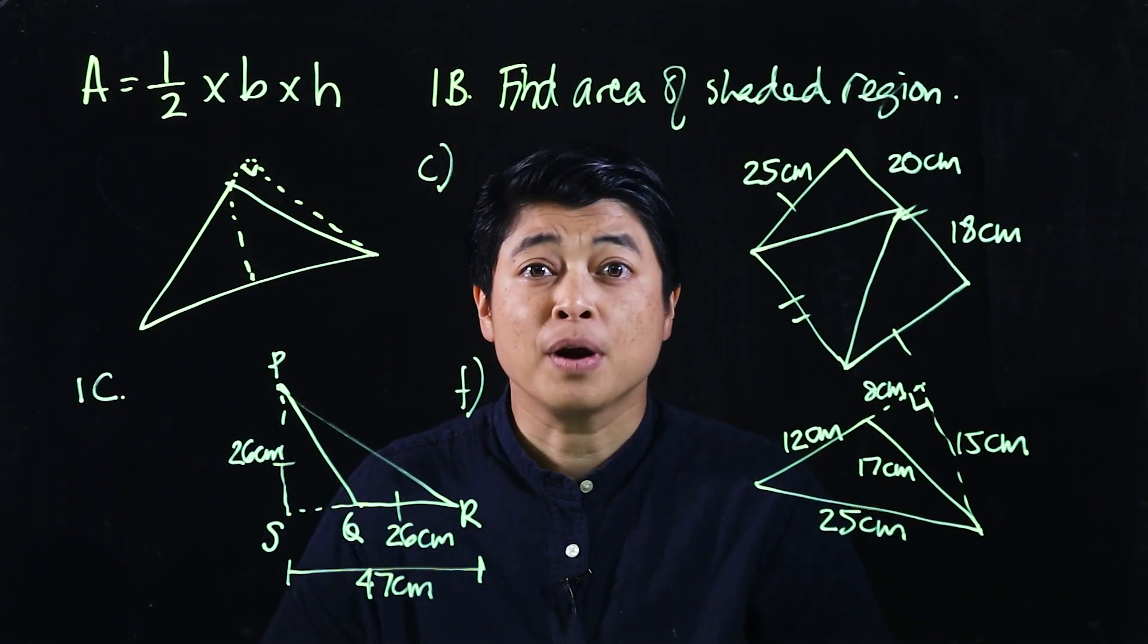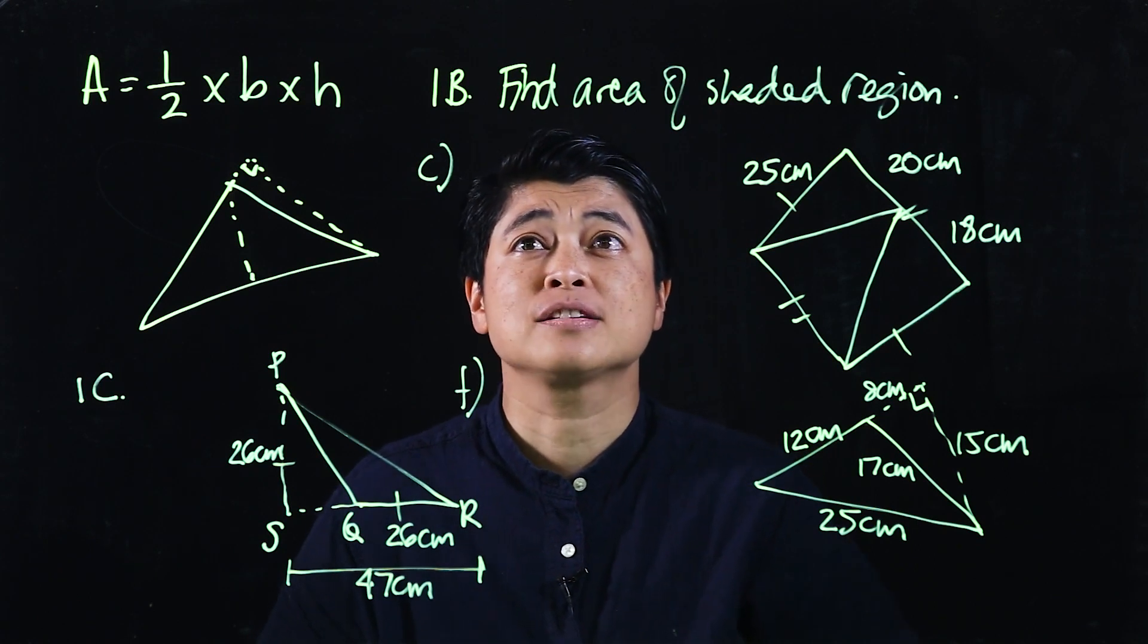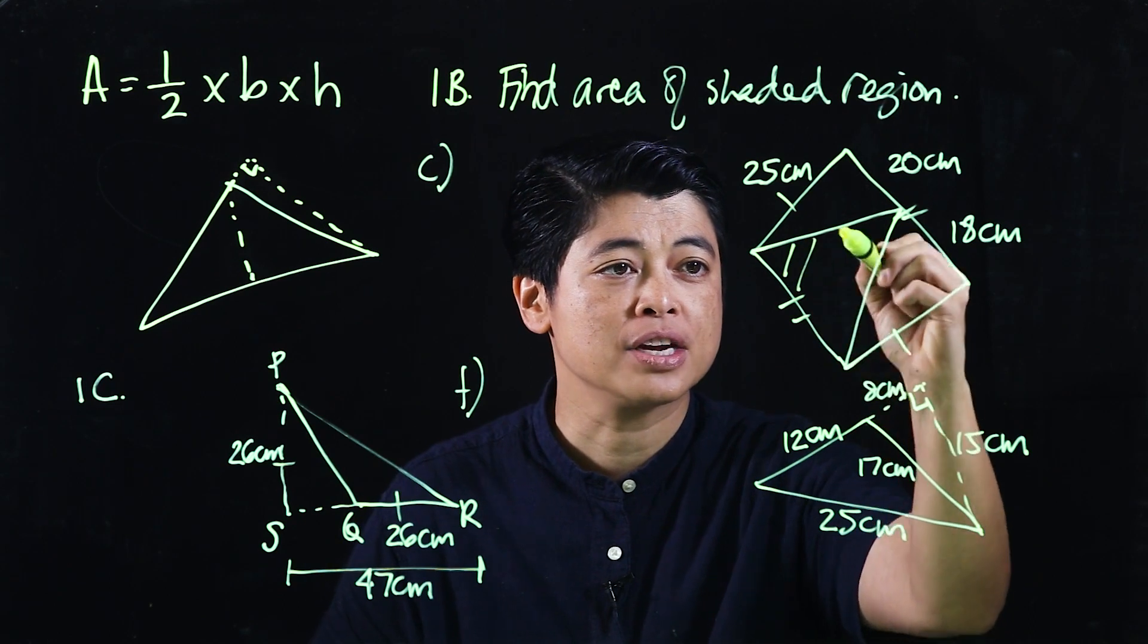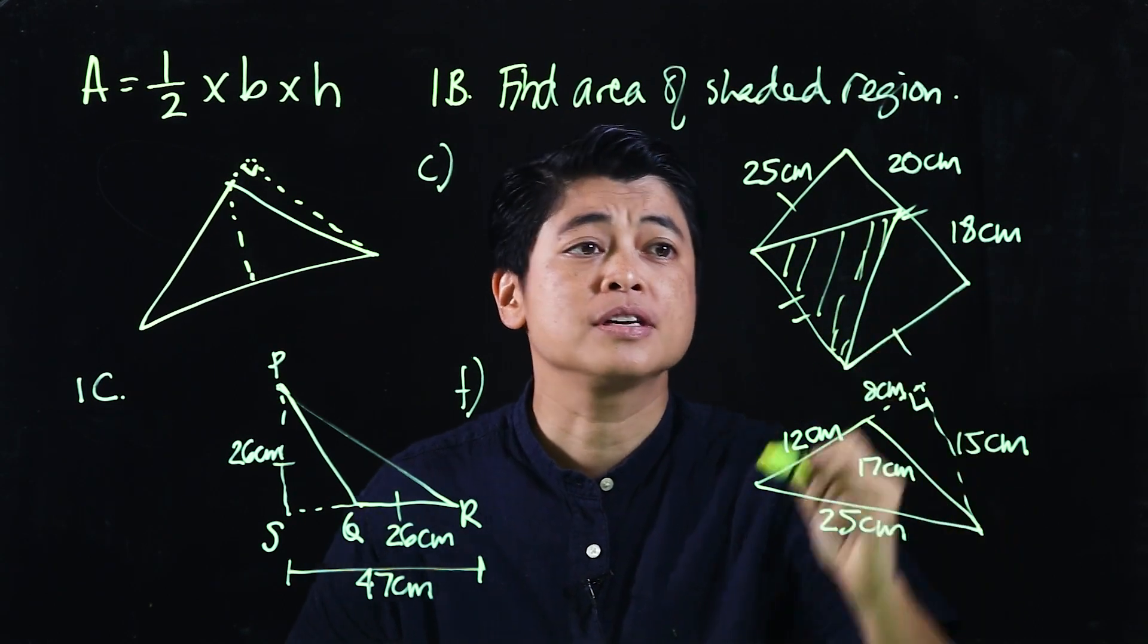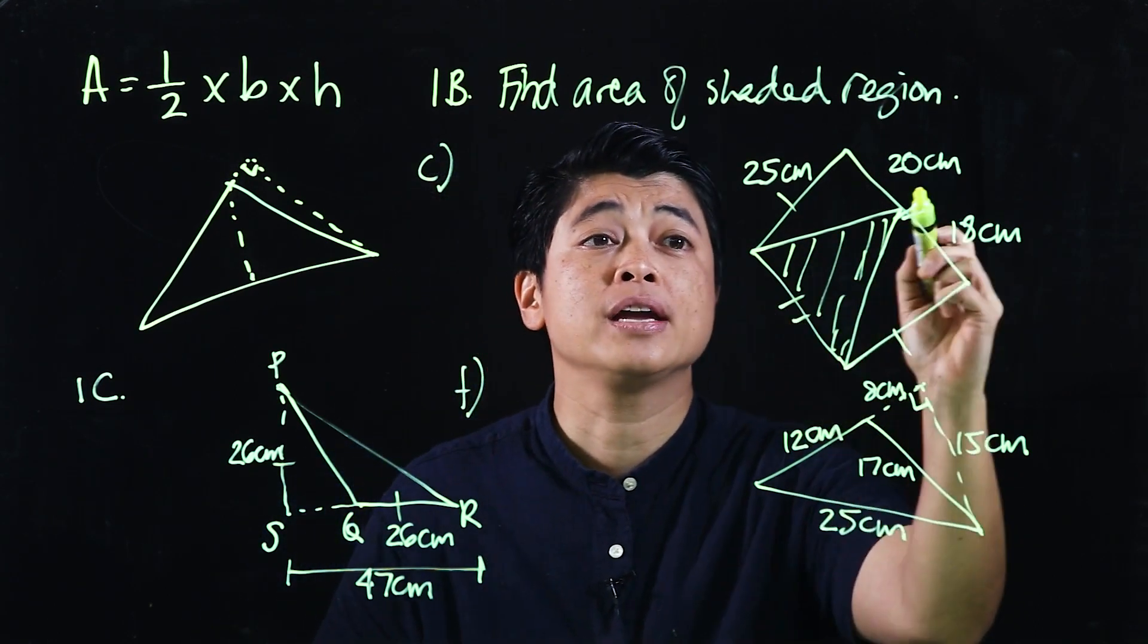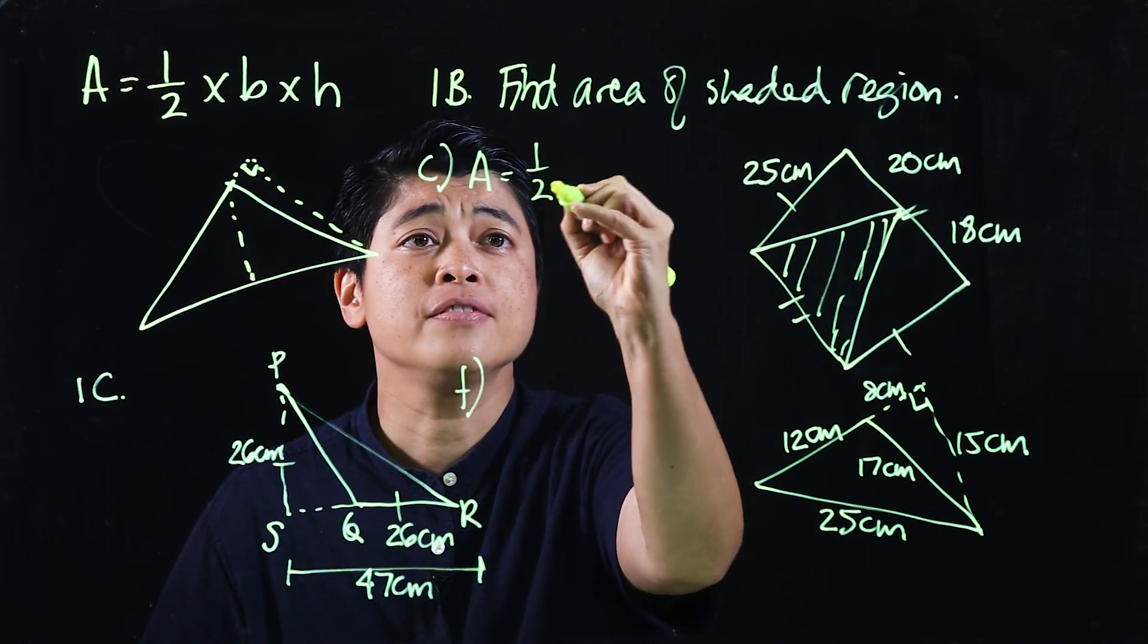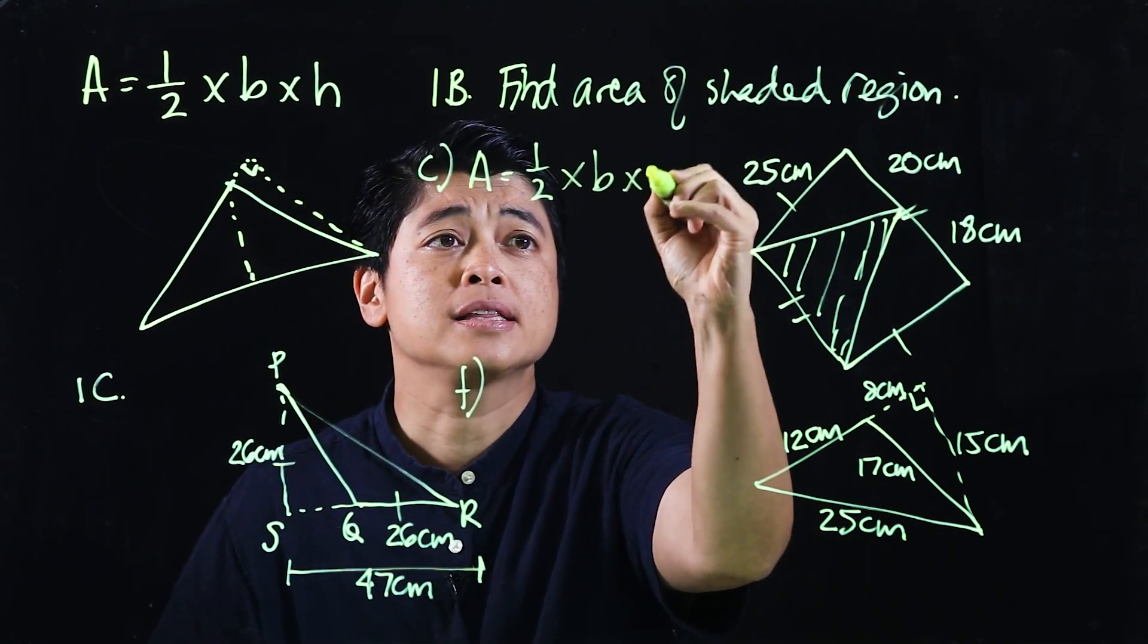For these problems, the first asks to find the area of the shaded region, and this is the shaded region. So the shaded is a triangle, so if we write the area, one half times base times height.